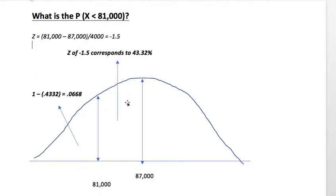So, the area in question, in other words, let me be a little redundant here. The area between 87,000 and 81,000, which in Z terms is negative 1.5, corresponds to 43.32%.